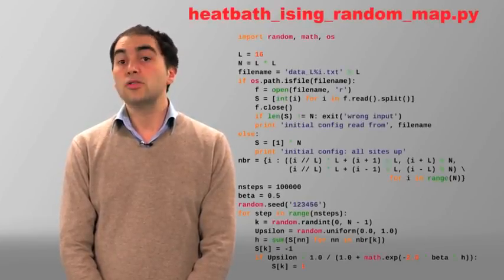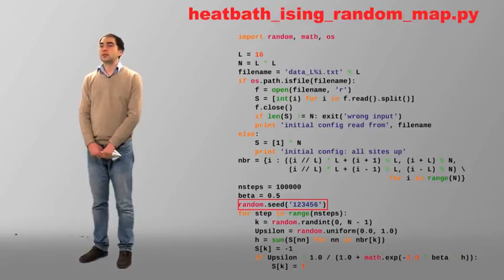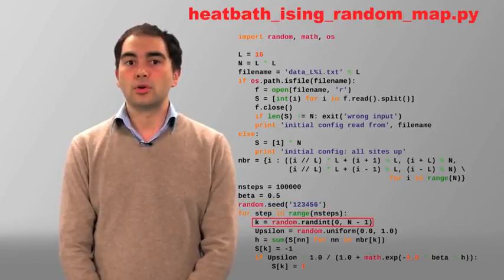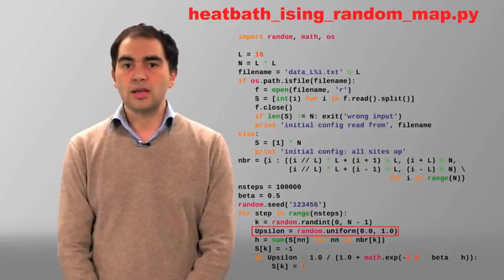Michael has made us observe that the heat bath algorithm produces identical output for the Ising model, even if we start from different initial configurations. Let us formalize its observations in terms of an algorithm, heatbath_ising_randommap.py. This algorithm has no starting configuration, but has a seed, which produces the deterministic sequence of the sites k for the spin update and of the random number y for the thermalization of the heat bath algorithm.